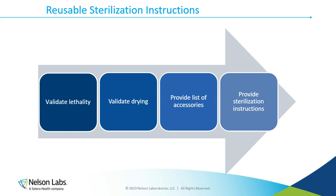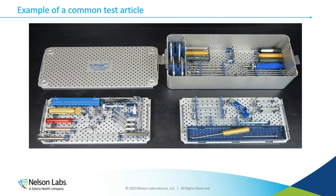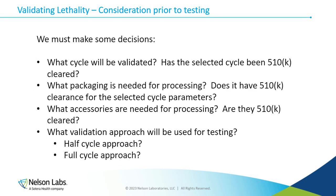The first step of the process is to validate the lethality. The process flow is: select inoculation locations for the test article, inoculate that product, package it, expose the product to our validation conditions, perform a sterility test on those biological indicators, and then score them for growth. Here is an example of a common test article we might see when performing a validation for a reusable device customer, though we do see quite a variety.